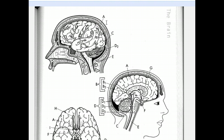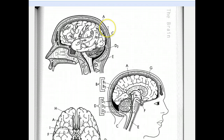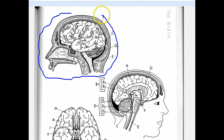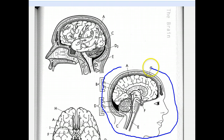Now grab something to color with because we're going to look at where these parts are on a diagram of the brain. We have two different brain diagrams here. The brain at the top shows what the brain looks like if you removed half the skull — you're seeing the outside of the brain. The one below is a cross section — this is if you cut the brain in half down the middle. There's a portion in the center visible in the cross section that you cannot see in the top view.